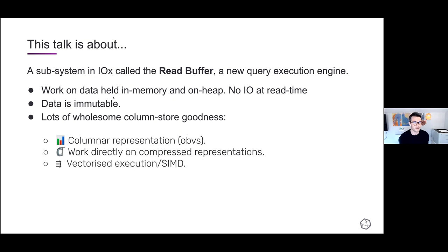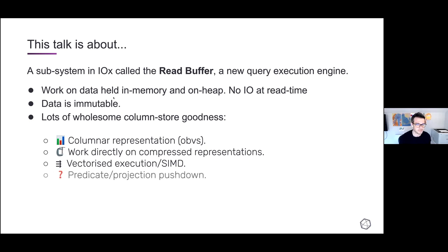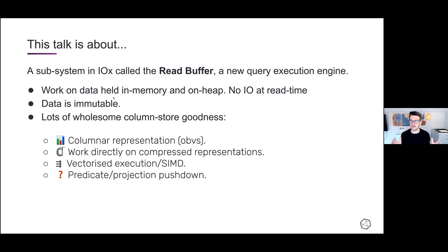We can think of this data as immutable, which is a nice property — it lets us leverage certain techniques to improve read performance. There's a bunch of interesting column store work we're doing in the read buffer: a columnar representation, working directly on compressed representations as much as possible, leveraging vectorized execution, and making use of modern hardware features such as SIMD. We think carefully about how we organize data to leverage those features.